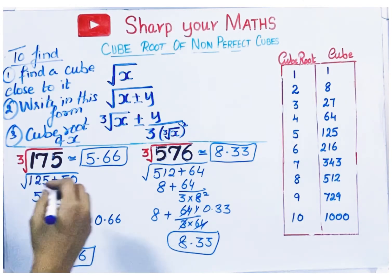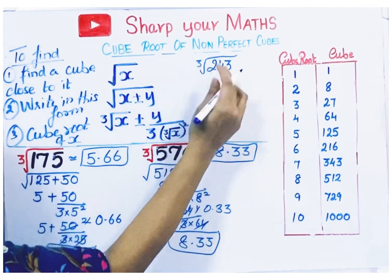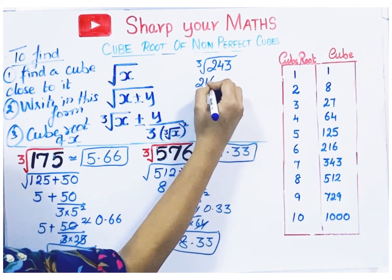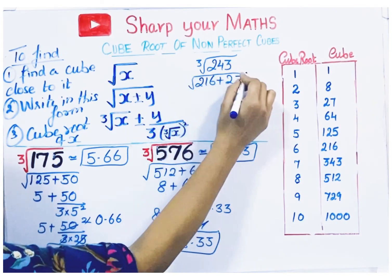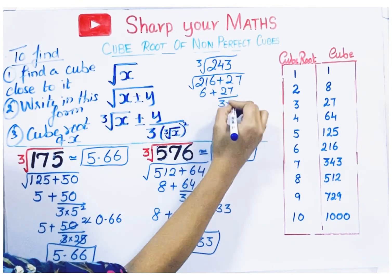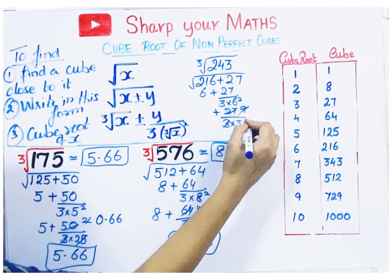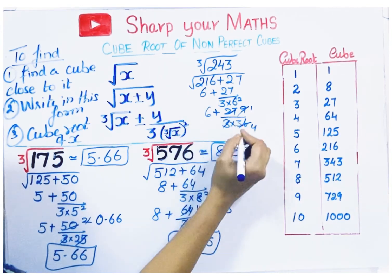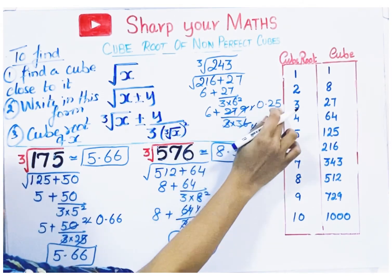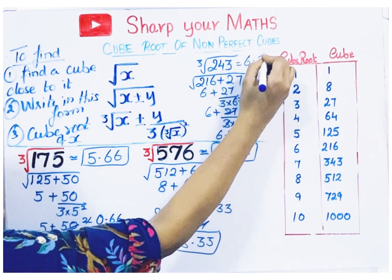Let's find the cube root of 243. Check the cube closest to it — 243 is close to 216. Write it as 216 plus 27. The cube root of 216 is 6. So the cube root of 243 is approximately 6 plus 27 divided by (3 times 6 squared), which is 6 plus 27 divided by 108. That gives 1 by 4, which is 0.25. So 6 plus 0.25 is 6.25 — the cube root of 243 is approximately 6.25.